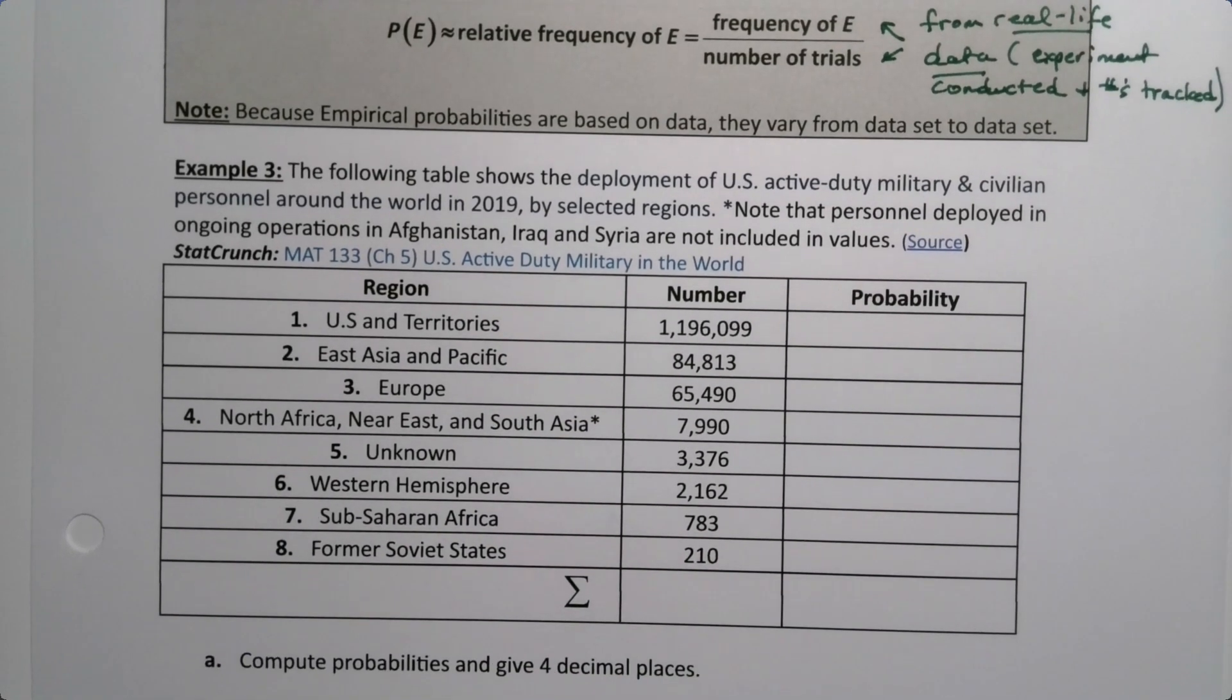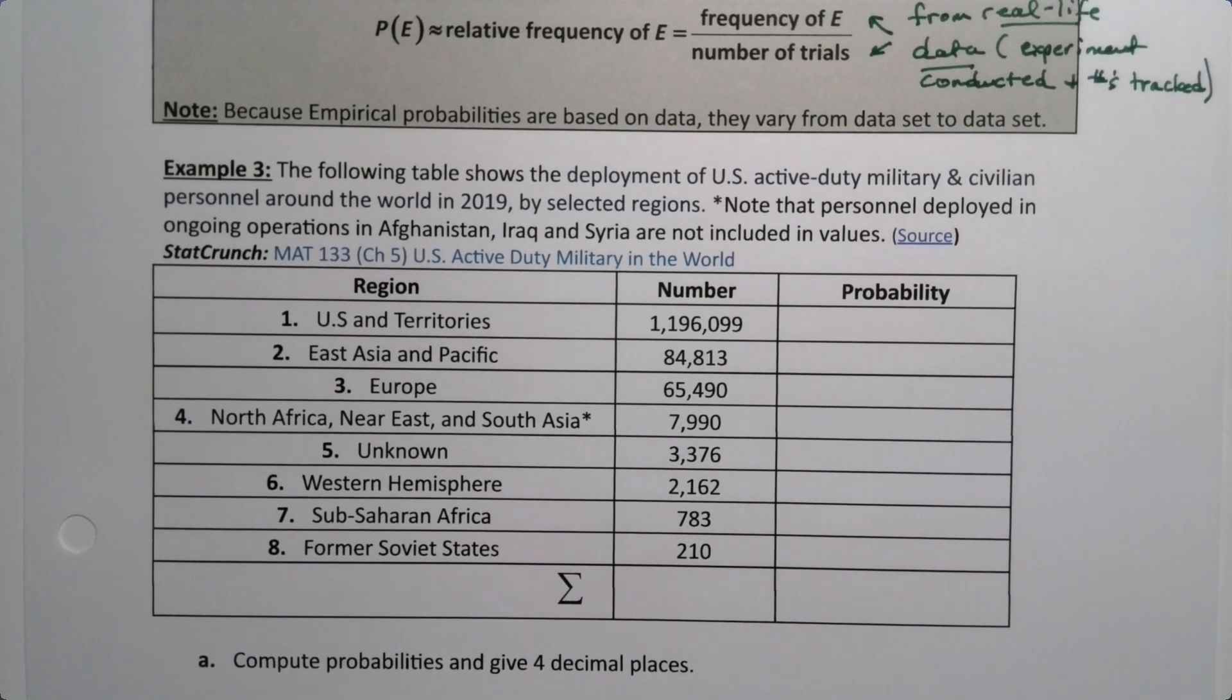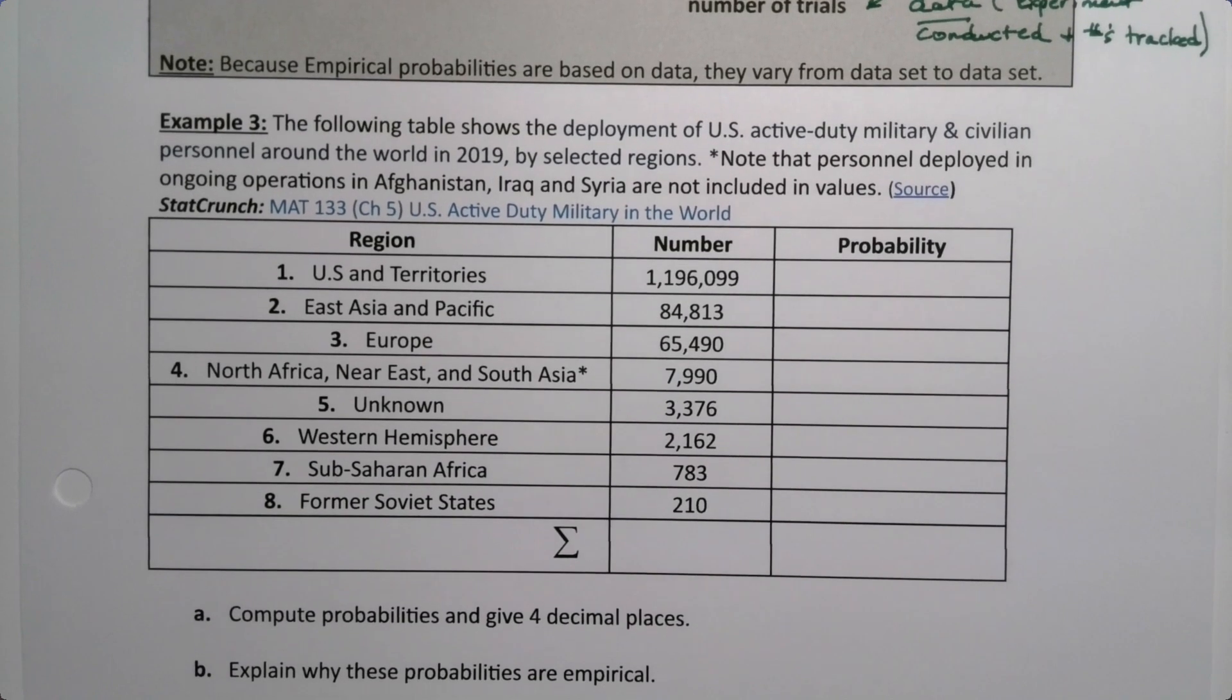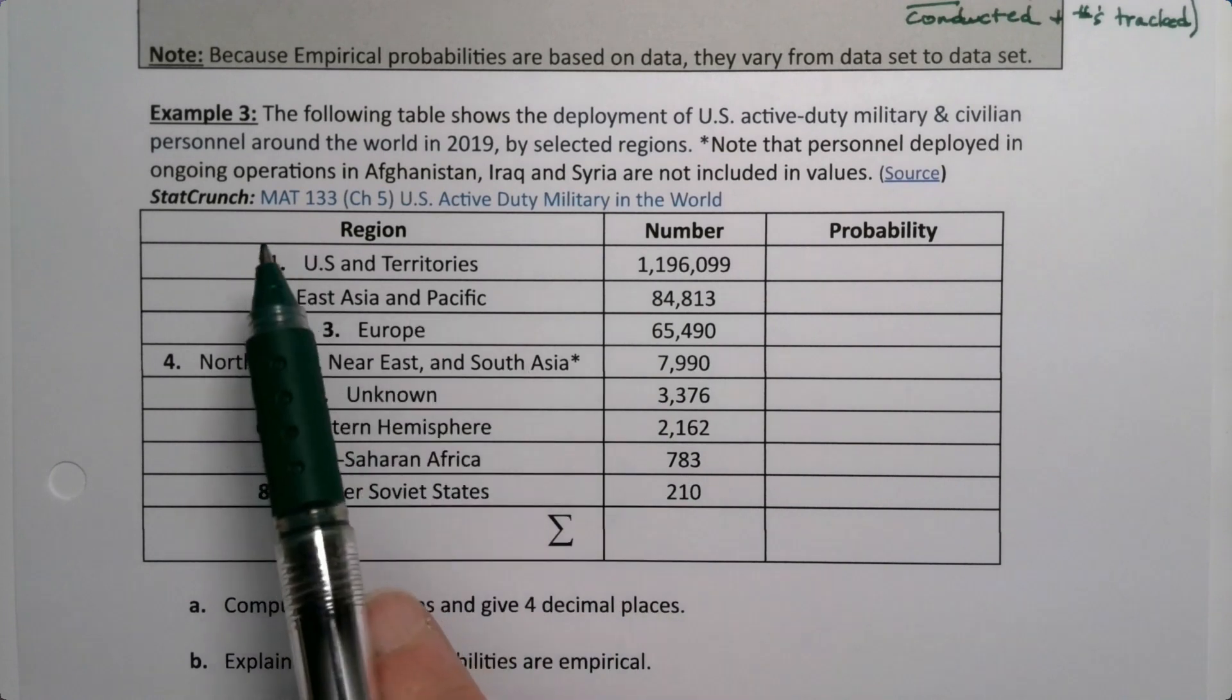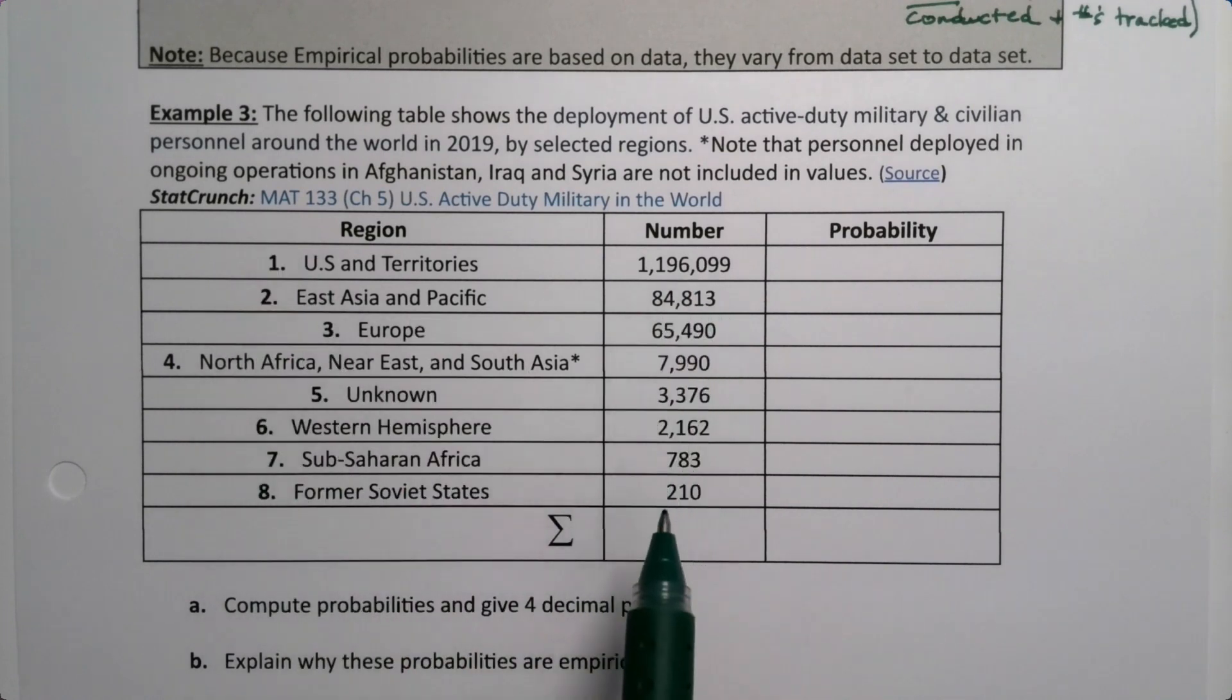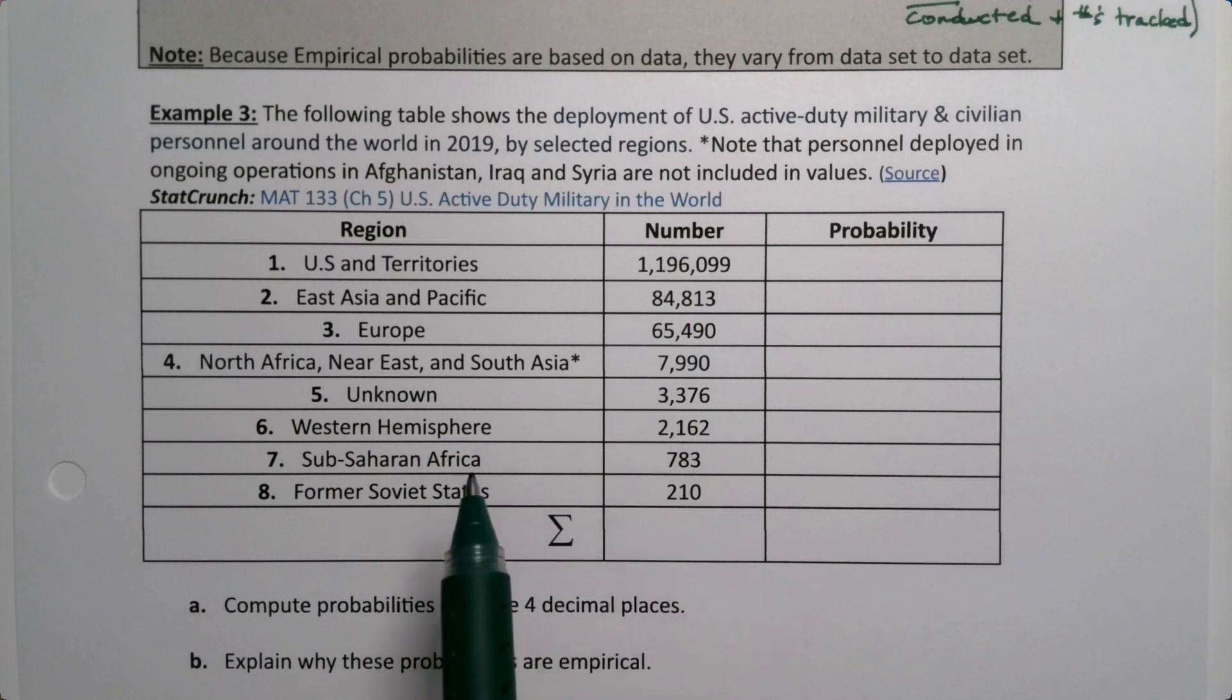Let's look at the following table. It shows the deployment of US active duty military and civilian personnel around the world in 2019 by selected regions. Note that personnel deployed in ongoing operations in Afghanistan, Iraq and Syria are not included in those values. Here we have the regions right here, and these are the number of people that were deployed in those regions.